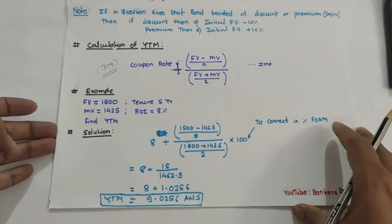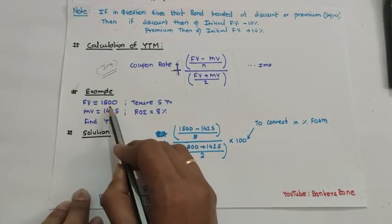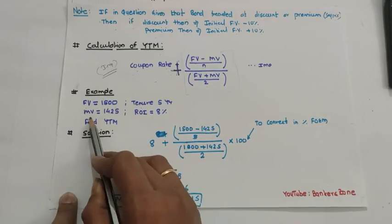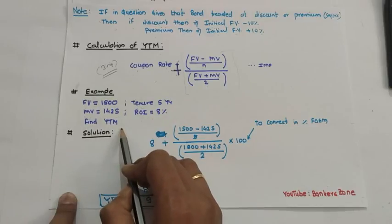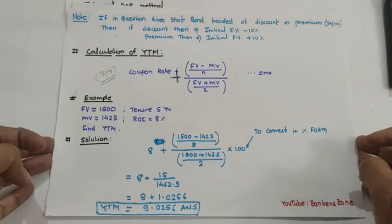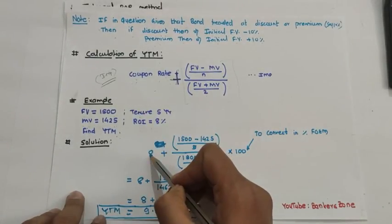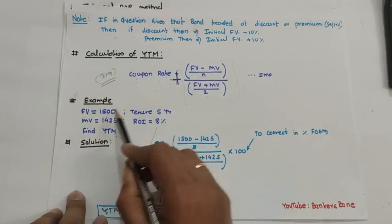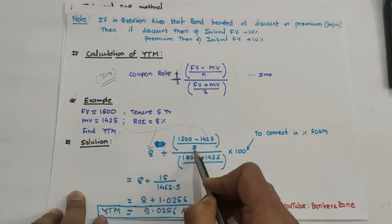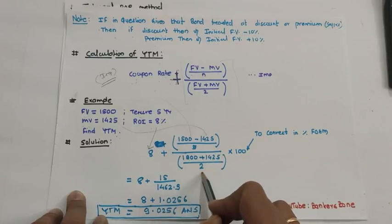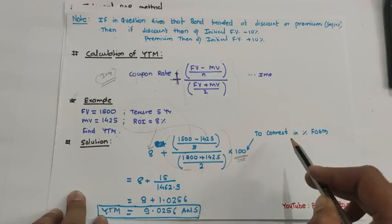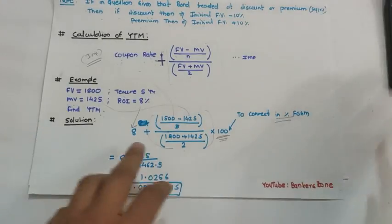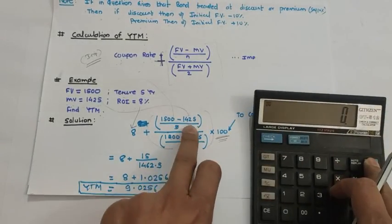See this example: face value is 1,500, number of years is 5, market value is given as 1,425, and rate of interest is 8%. We have to calculate YTM. Since market value is directly given, we can apply the formula directly. Coupon rate is the rate of interest. Face value minus market value: 1,500 minus 1,425 equals 75, divided by 5 years equals 15.